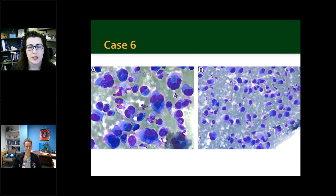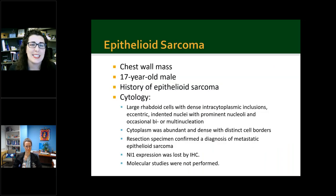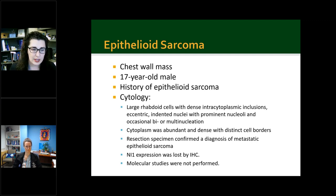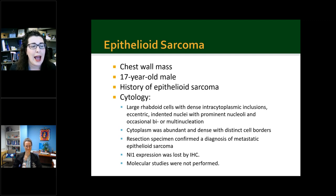Case six: at lower and higher power you can see scattered single rhabdoid cells with distinct cell borders, intracytoplasmic inclusions indenting the nucleoli, and bi- and multinucleation. This is a case of epithelioid sarcoma. In this cohort there was one 17-year-old male presenting as a chest wall mass. Cytologic pearls: you'll have large rhabdoid cells with intracytoplasmic inclusions, prominent nucleoli, and multinucleation. The resection specimen confirmed a diagnosis of metastatic epithelioid sarcoma. INI-1 expression was lost by IHC, and molecular testing was not performed on this case.